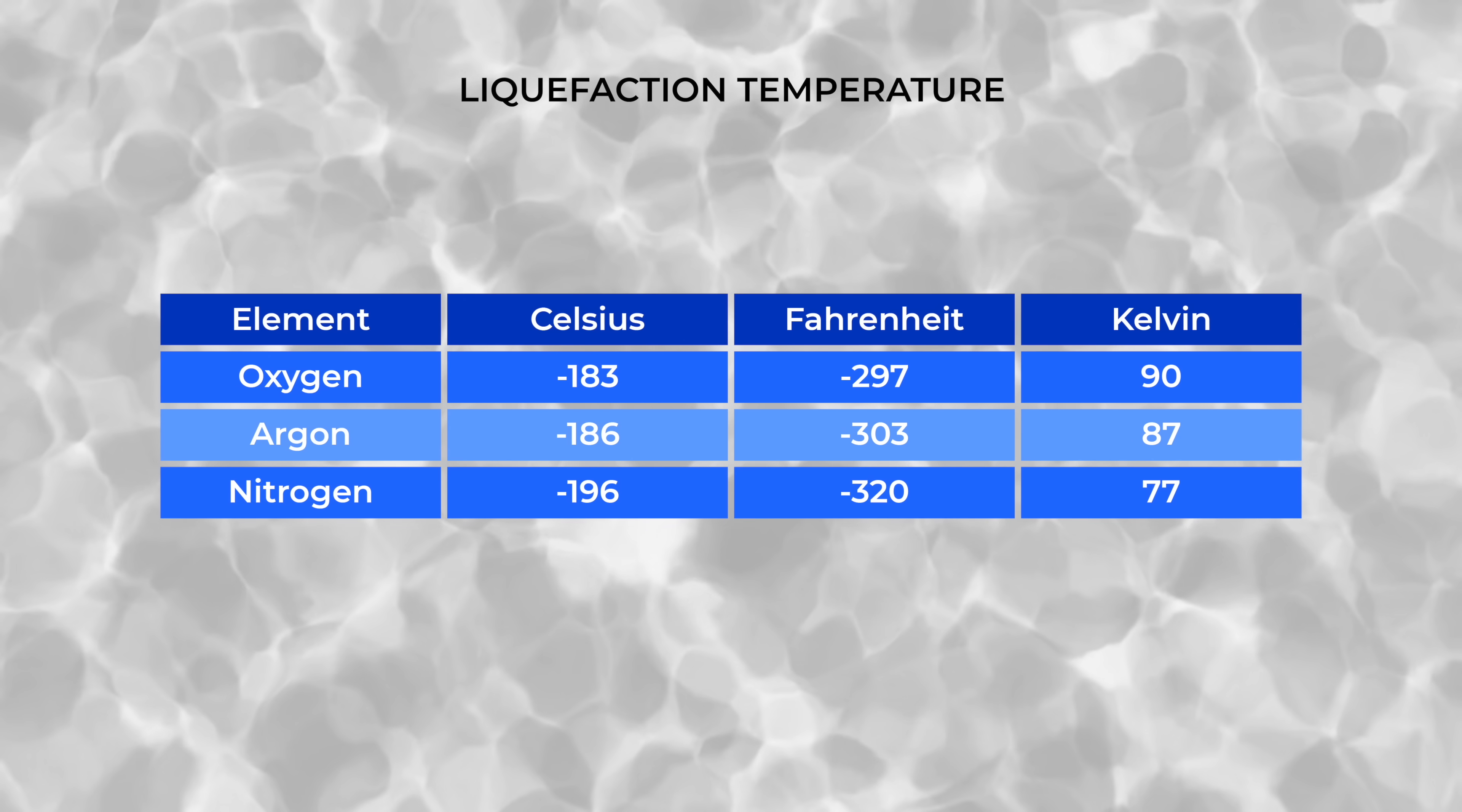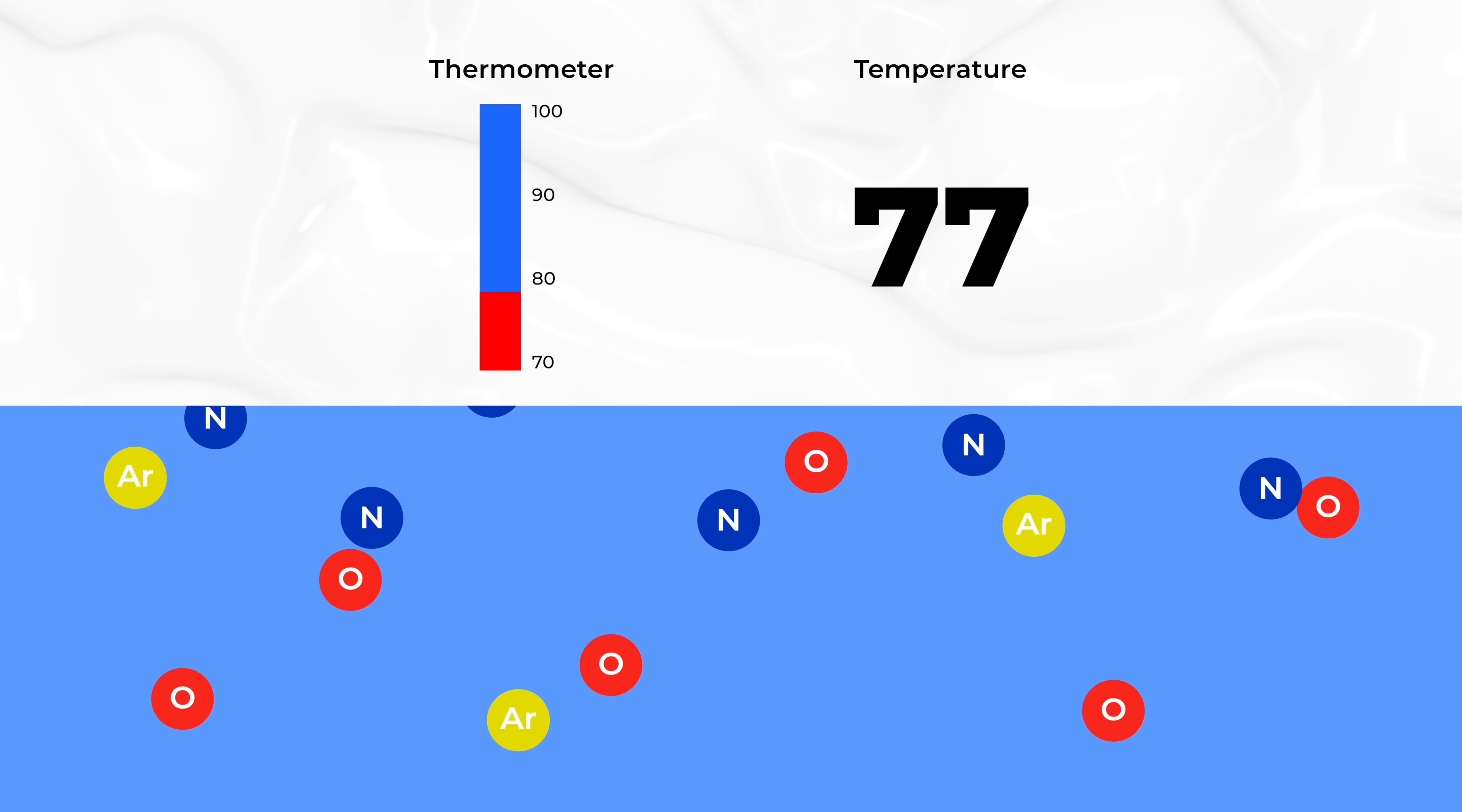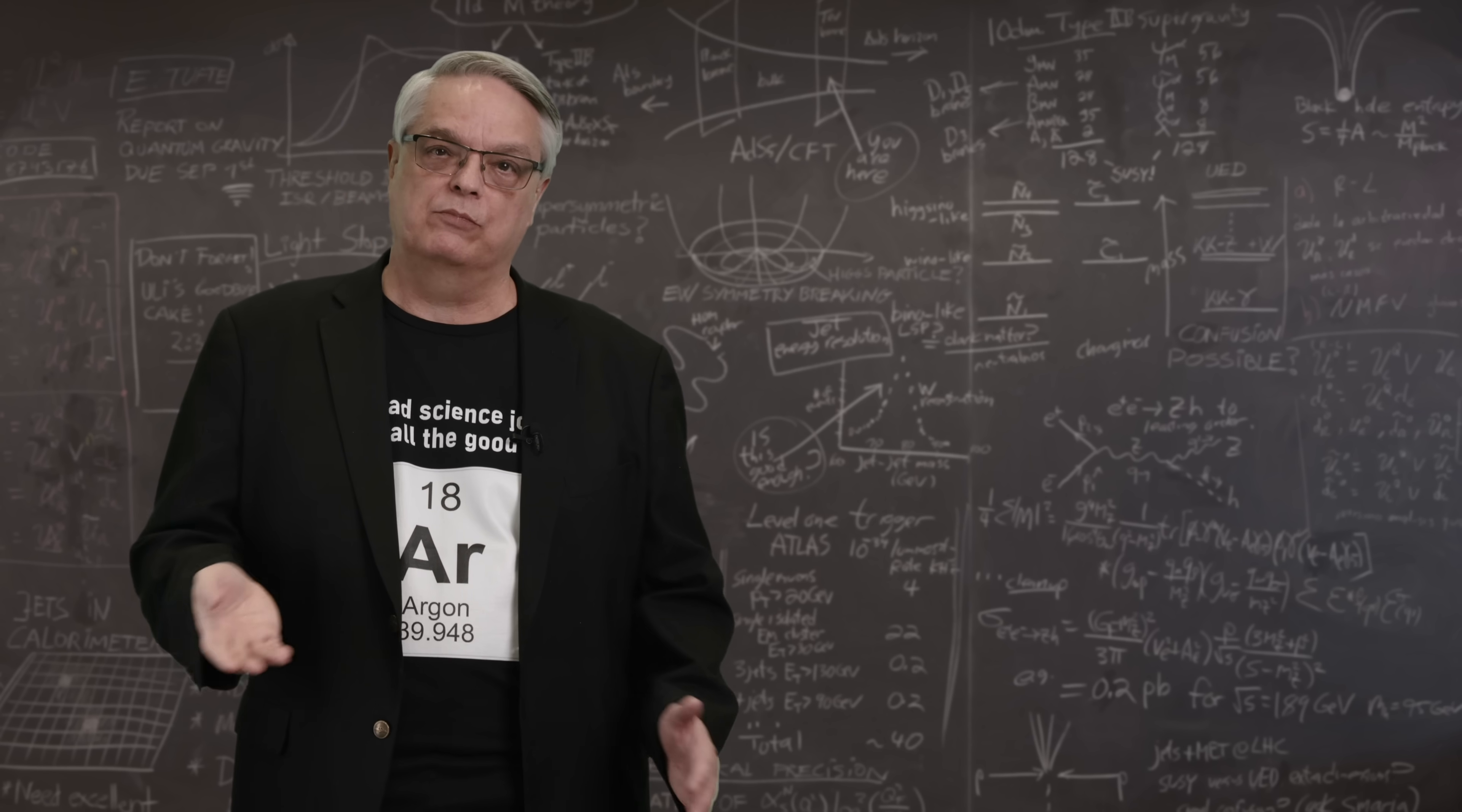Oxygen boils at 90 kelvin, argon at 87 kelvin, and nitrogen at 77 kelvin. So what companies do is take very cold air and raise the temperature to just above 77 kelvin. The nitrogen boils off, leaving the liquid argon and oxygen. Once the nitrogen has been harvested, they raise the temperature to just above 87 kelvin, and the argon boils off, leaving just liquid oxygen behind. The argon is collected and then cooled again to liquefy it. It's a beautiful example of distillation. Exactly the same principle as how both hard liquor and petroleum products are made.